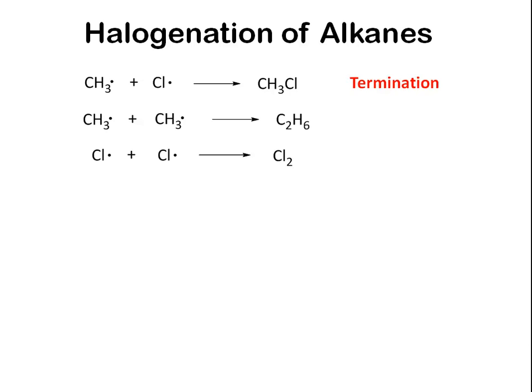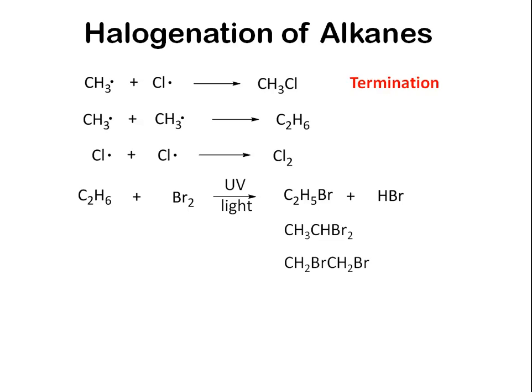With all these possible reactions going on, a large number of products can be formed. For instance, when reacting bromine with ethane, you will form bromoethane and hydrogen bromide, but you'll also form some 1,1-dibromoethane, 1,2-dibromoethane, butane, tribromoethane, and many other products.